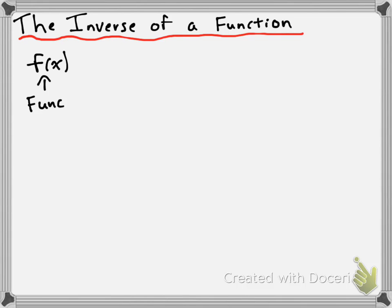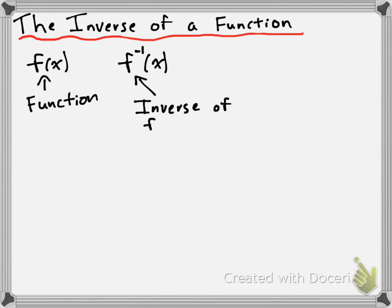If we have a function, which we're going to call f of x, then if we want to take the inverse of this function, we're going to denote it f with a little negative 1 of x, which can be read as the inverse of f of x, or more commonly the f inverse of x. That negative 1 is not an exponent — it's a superscript, and it indicates that you're talking about an inverse of a function.